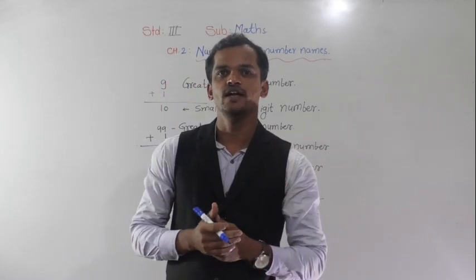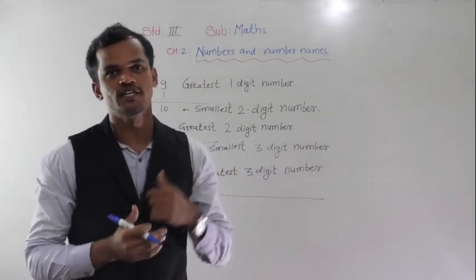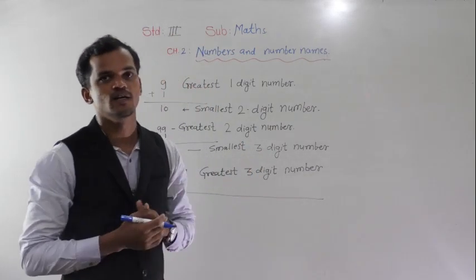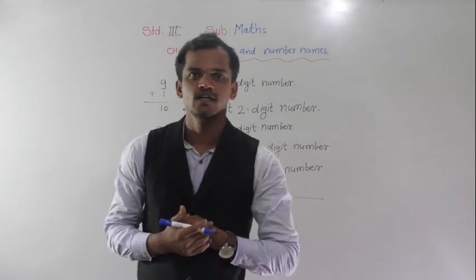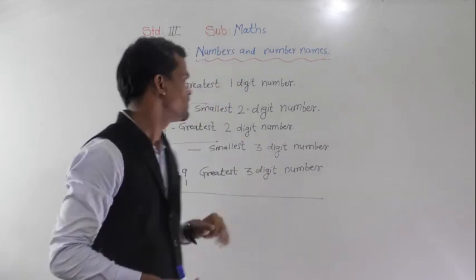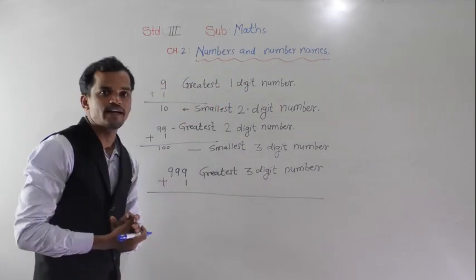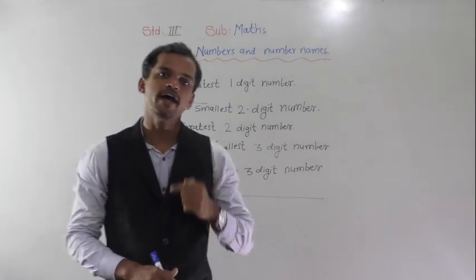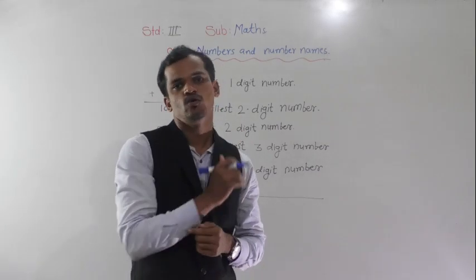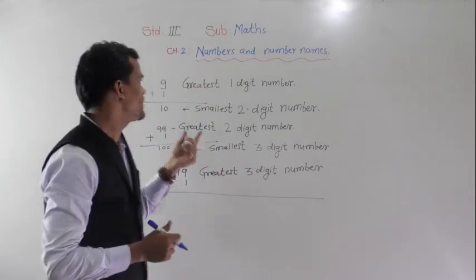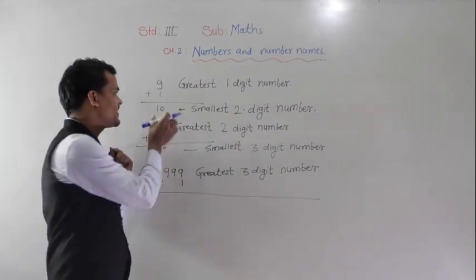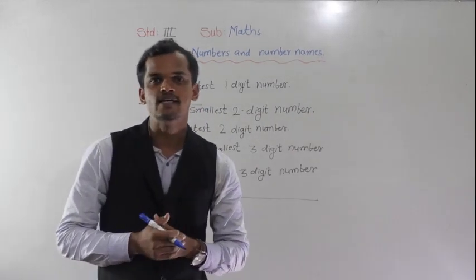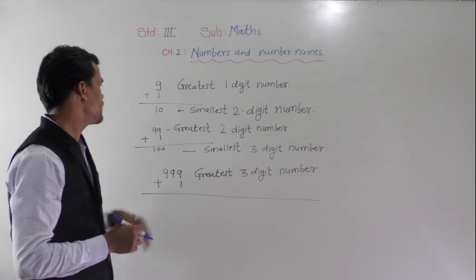Good morning dear students. In previous standard we have learnt numbers up to 3-digit numbers. So in this standard we will learn 4-digit numbers. Here, 9 is the greatest 1-digit number. If we add 1 into 9, we will get 10, and this 10 is the smallest 2-digit number.